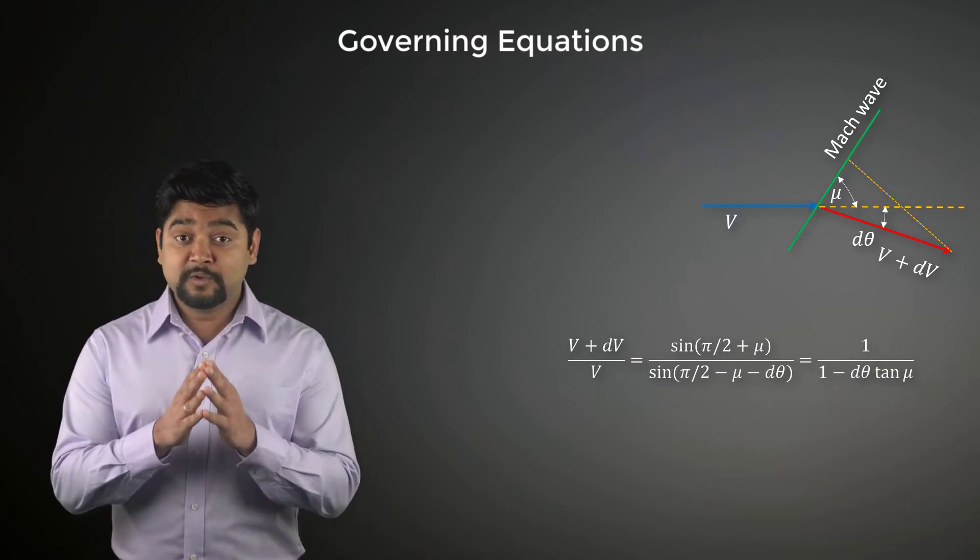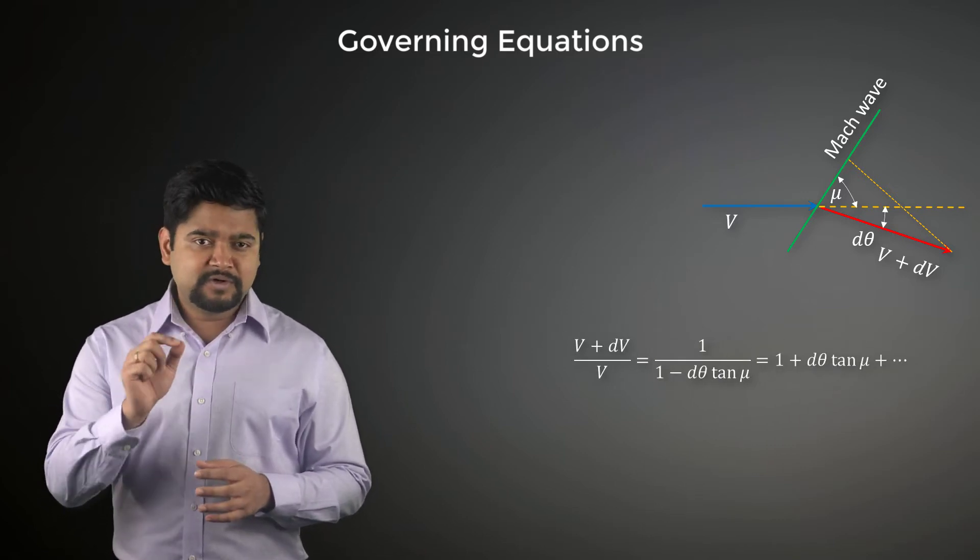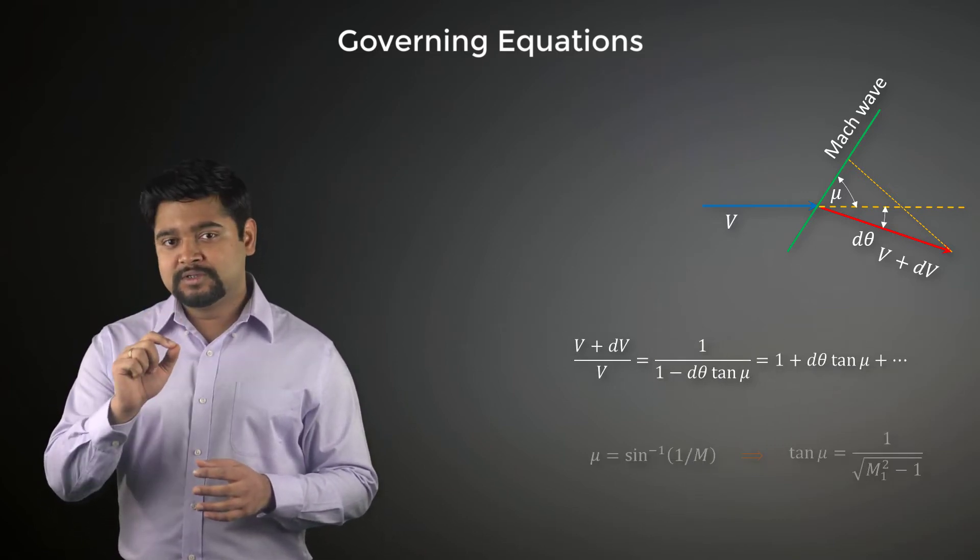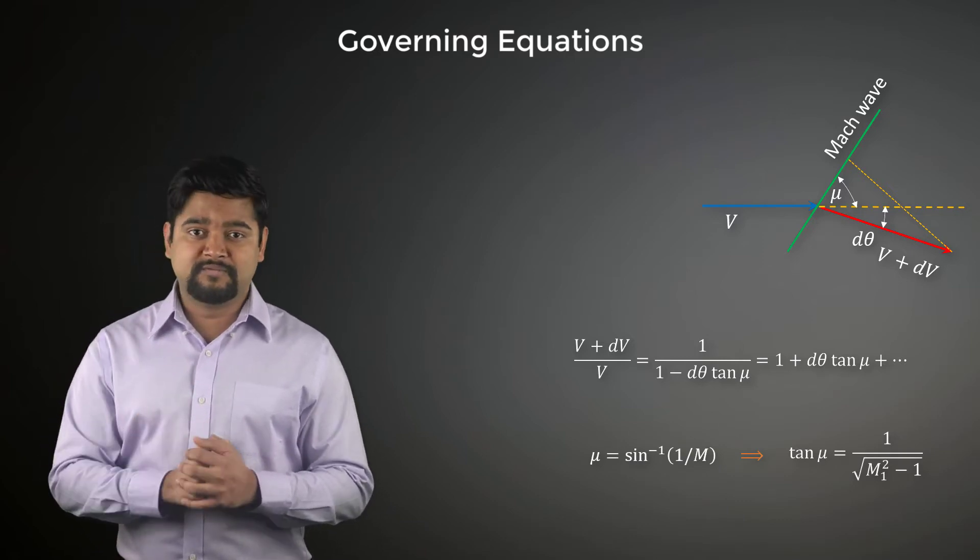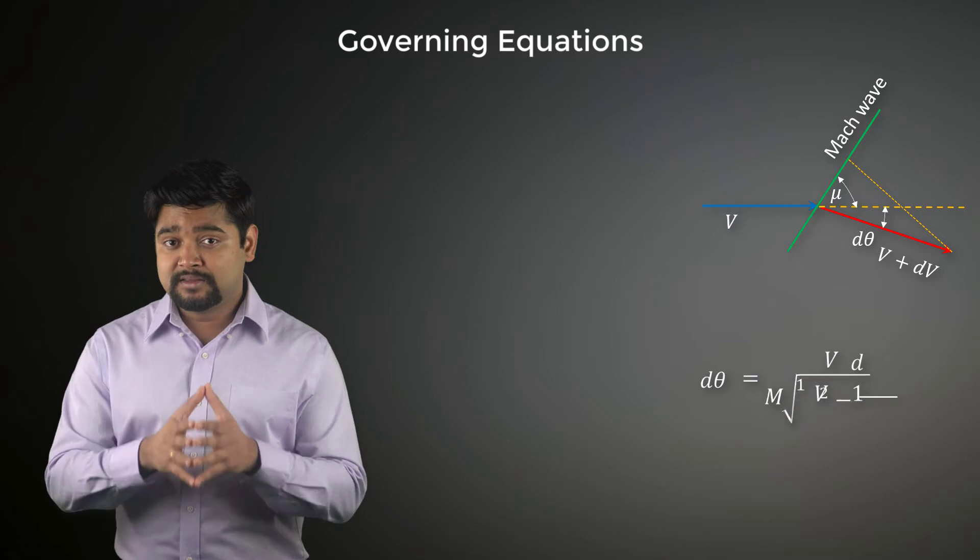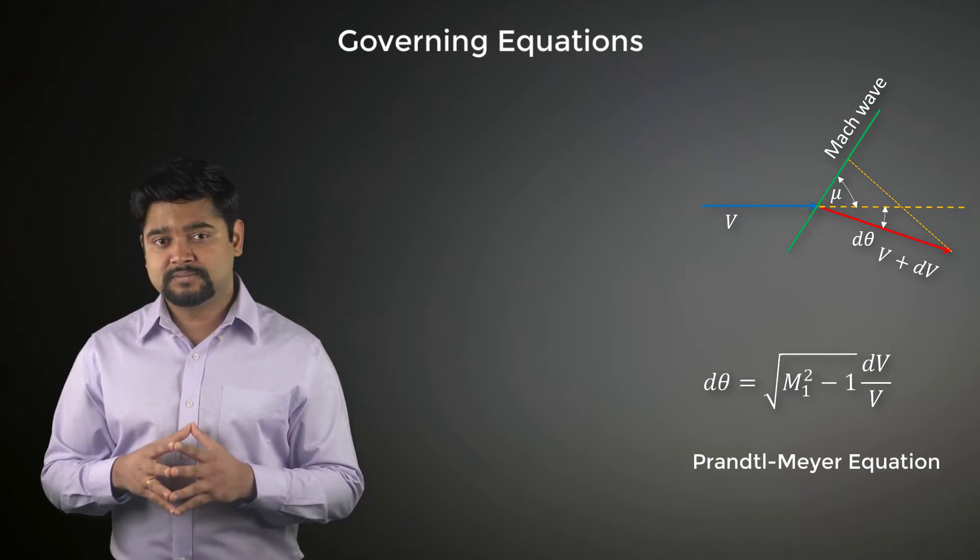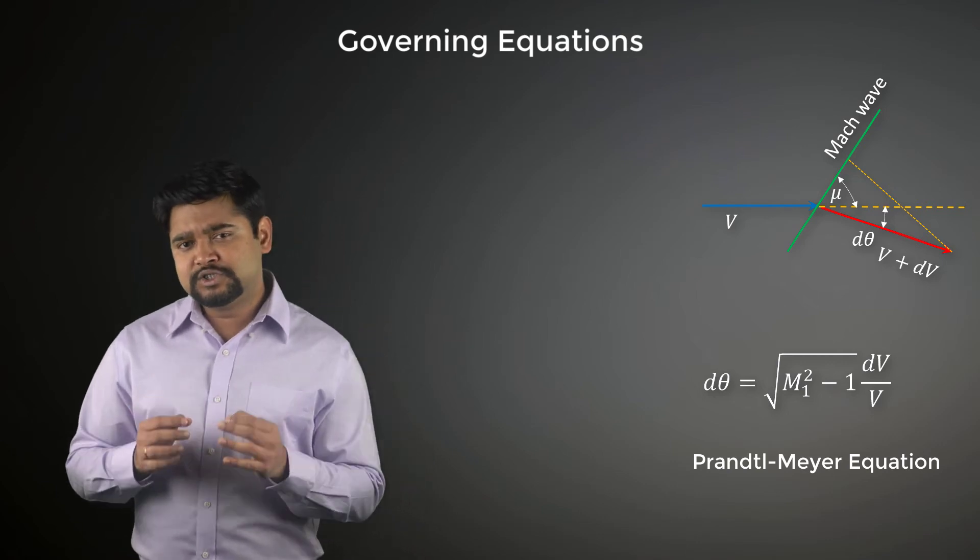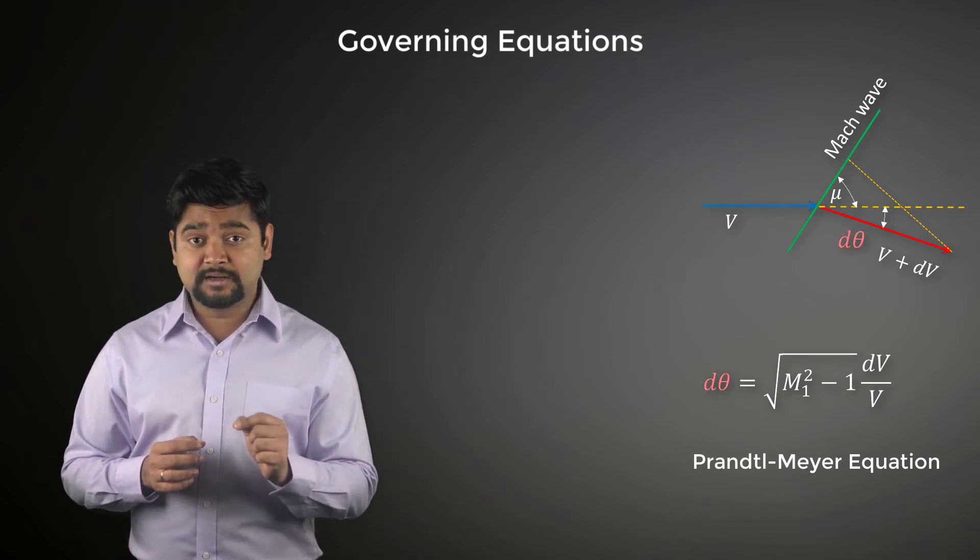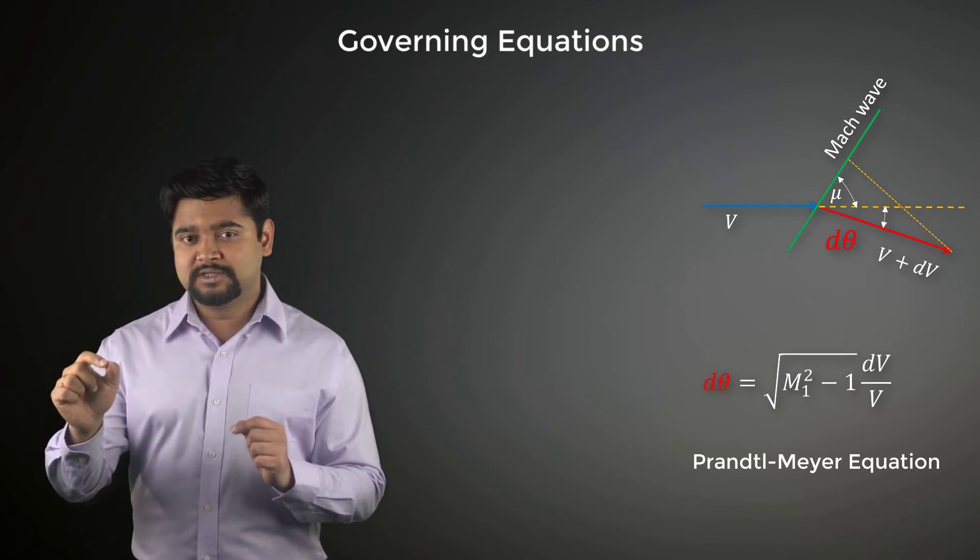If we now use Taylor series expansion up to the first order term, we use the relationship between the Mach angle and the Mach number of the given Mach wave, we can get the Prandtl-Meyer equation. This is a differential equation relating the change in the flow angle d theta to the corresponding change in the flow velocity dv as the flow turns around this corner.